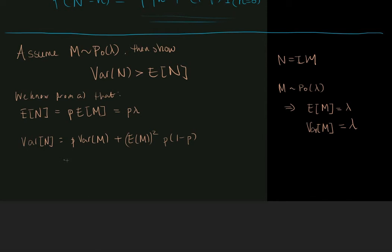So what we notice is the difference between the variance of n and the mean of n is that the variance of n equals the mean of n plus something that's greater than 0. Hence, the variance of n is greater than the mean of n.